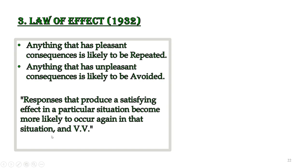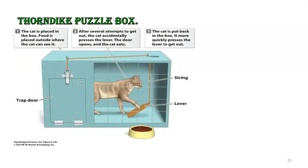Responses that produce a satisfying effect in a particular situation become more likely to occur again in that situation, and vice versa. Here is a quick view of the experiment performed by Thorndike — the famous puzzle box experiment, in which a cat is trapped in a box and has to solve the puzzle to reach food and experience a pleasurable effect. The food is placed outside the box, so it cannot be reached directly.